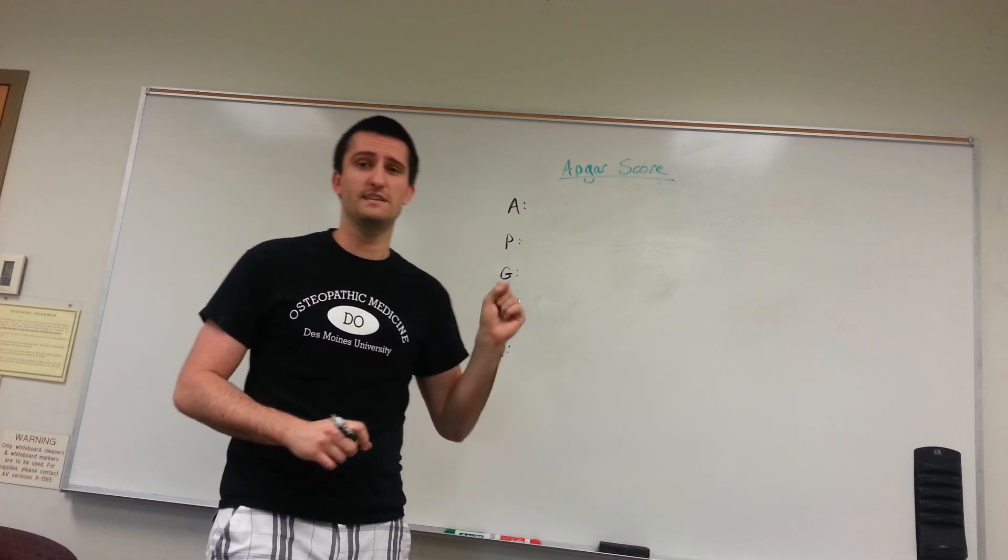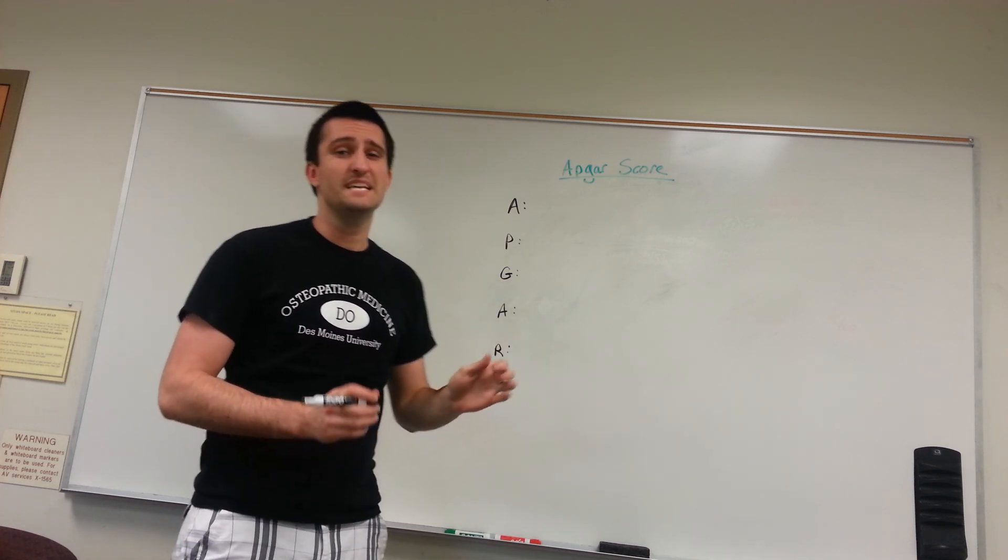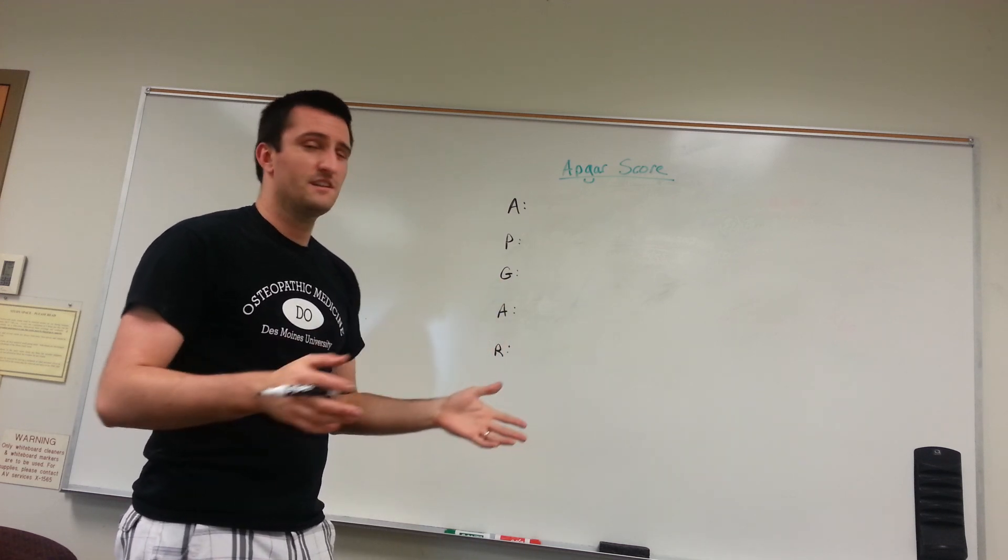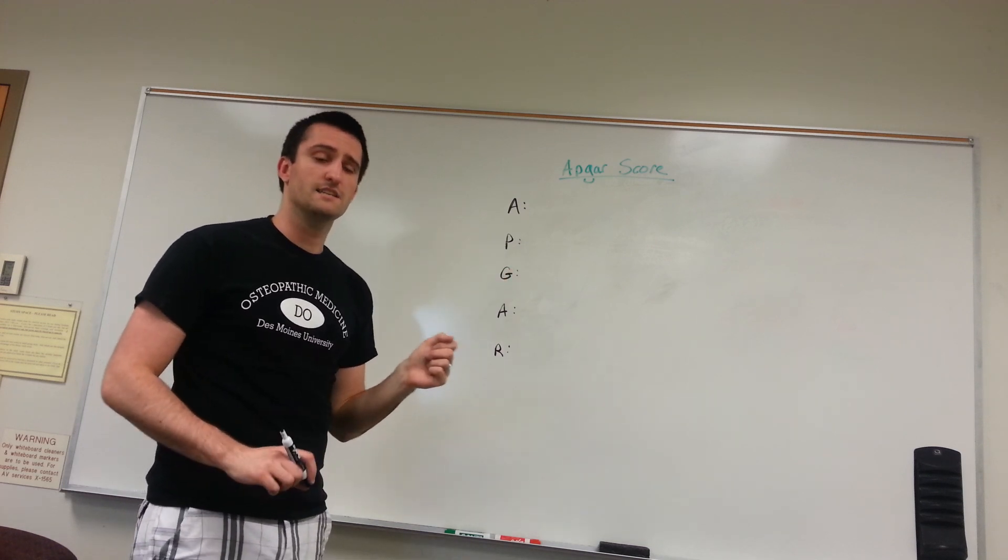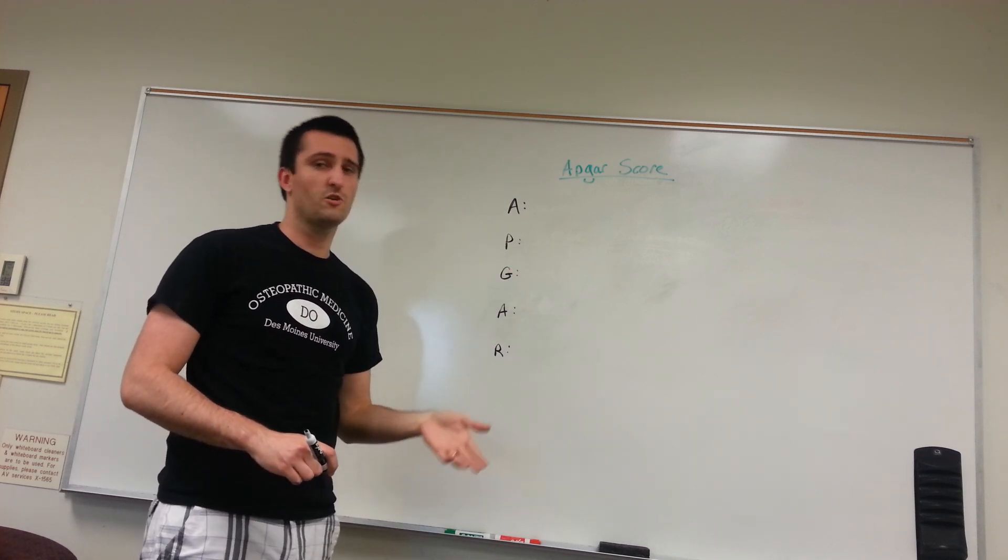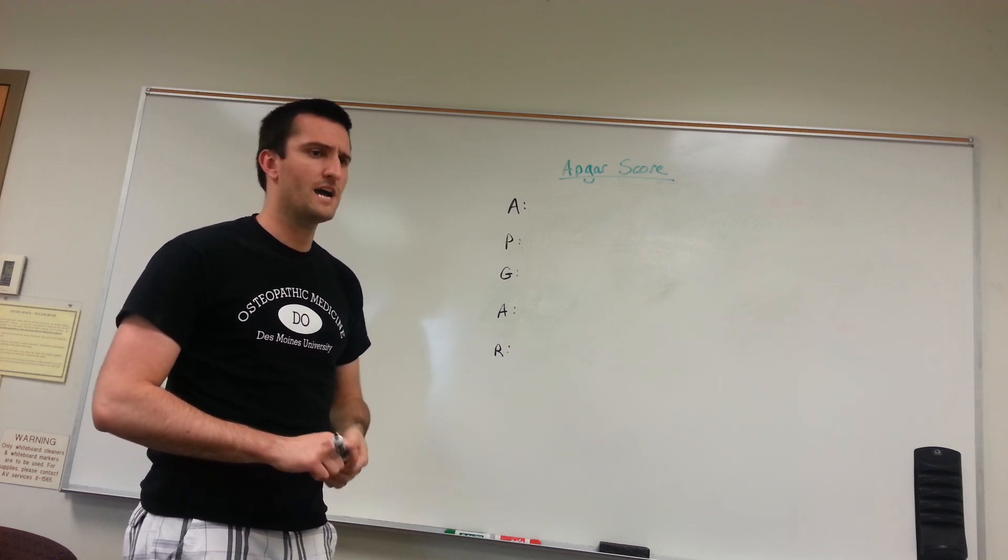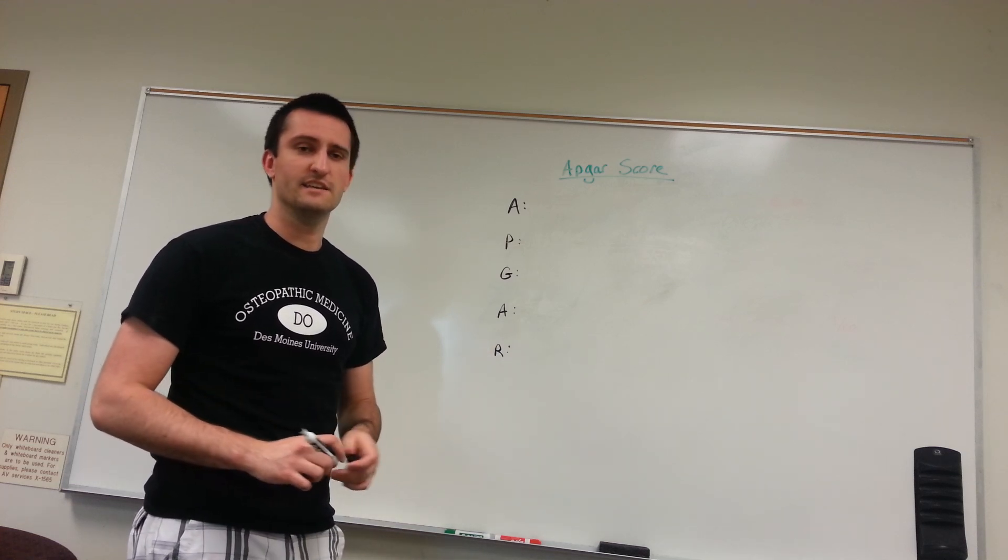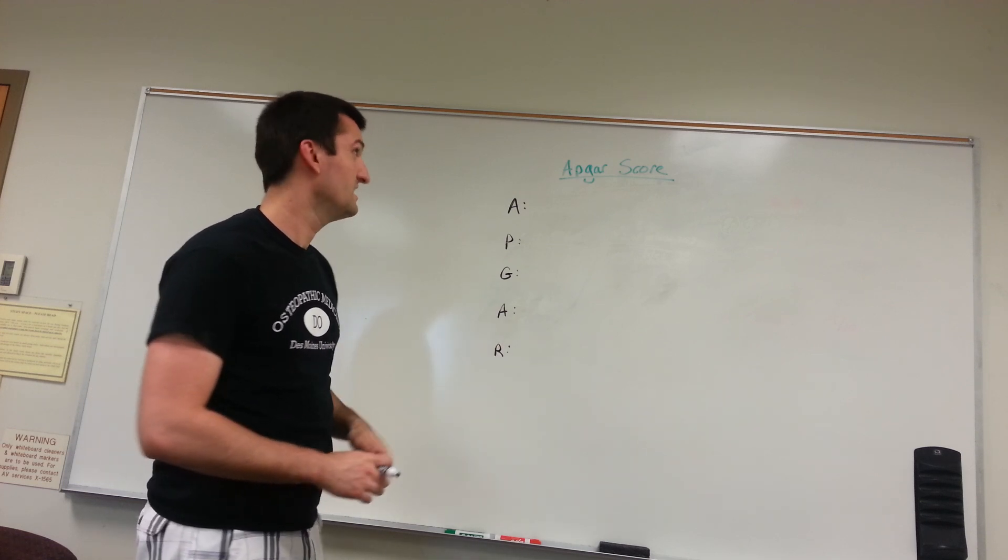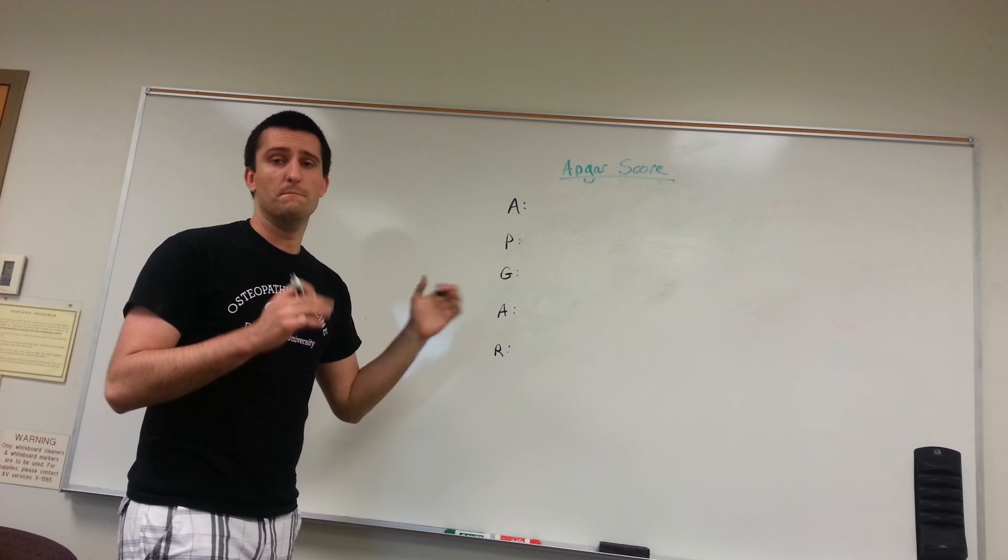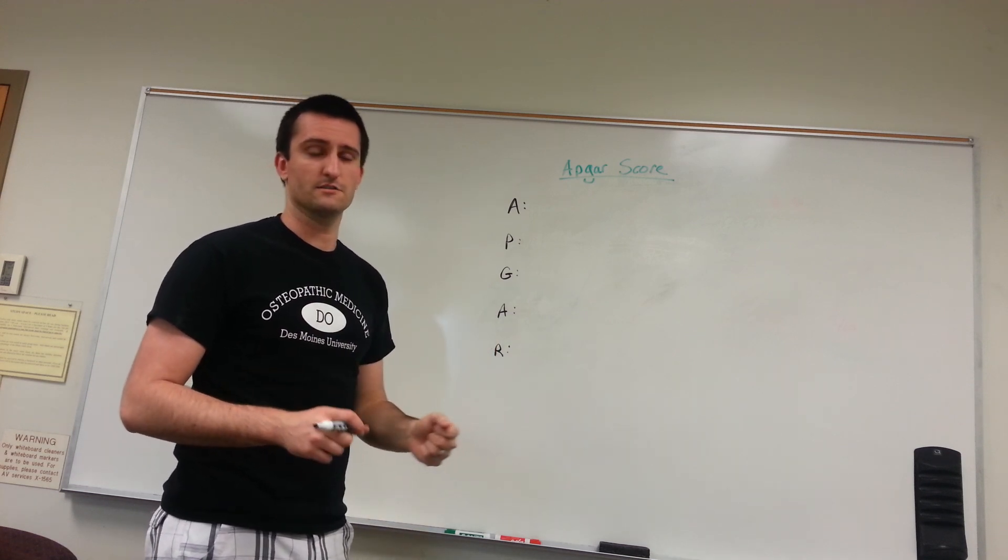A good APGAR score is anything seven or above. Typically, clinicians don't give the perfect 10 out of 10. Typically, you don't give a 10 out of 10 because no baby's perfect. And what happens if a baby suddenly collapses or dies and you give them a 10? Well, that's just bad luck. Seven out of 10 or above is an excellent APGAR score.